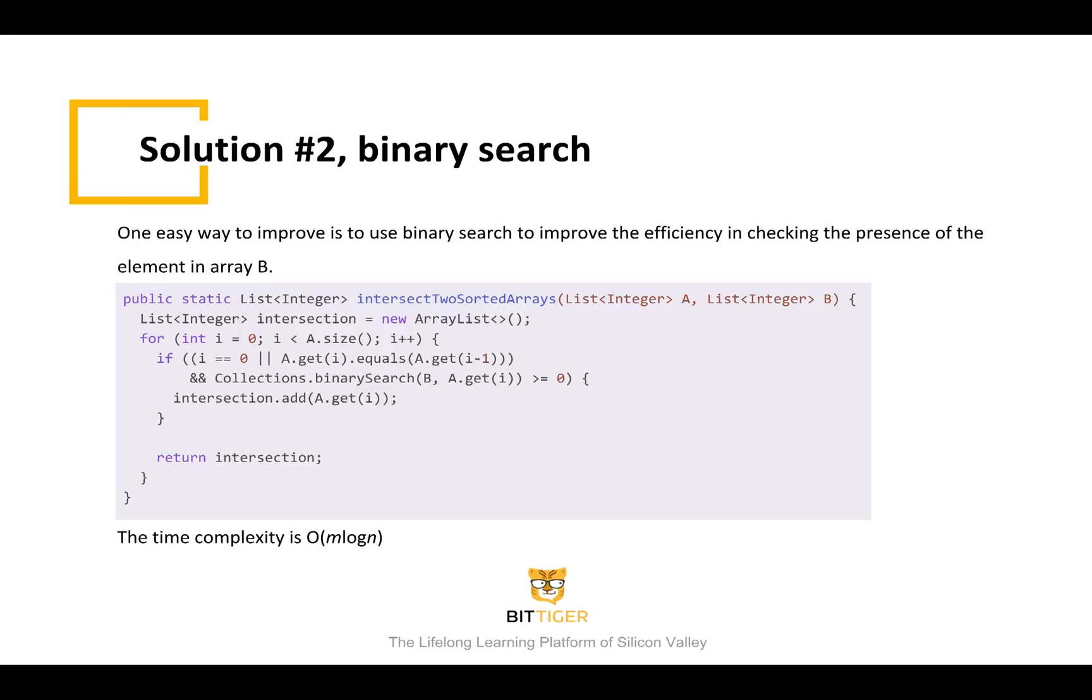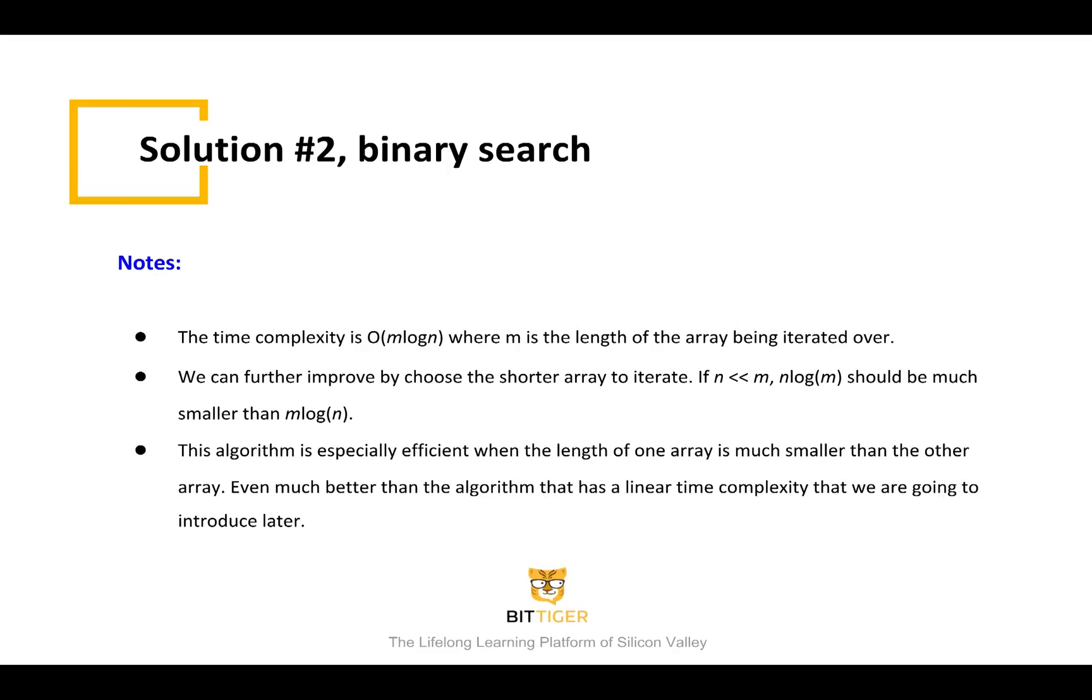This is the code for the solution. The only difference here is we use the binary search method to check if the element is also present in array B. In this solution, the time complexity will be reduced to big O of M times the log of N, where M is the length of array A, which the outer loop is running, and N is the length of array B, which we use to check if the element is present.